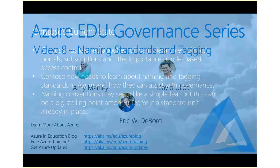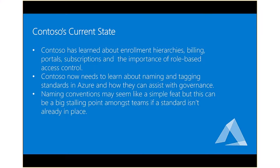In their current state, Contoso has already learned about enrollment hierarchies, different portals like the billing portal and the Azure portal, subscriptions, and the importance of role-based access. Now they need to learn about naming and tagging standards in Azure. Since they don't already have them for on-premises, they need to create some for cloud governance. Naming conventions, while they may seem like a simple feat, can really be a big stalling point — even a point of contention. Just make a choice and go. Maybe you can change it later, but at least get a good starting point.